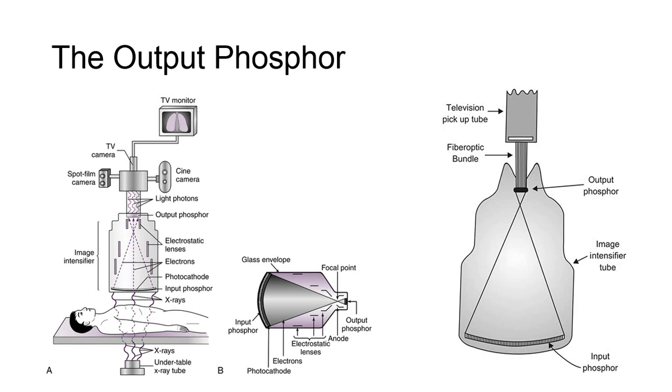It should be noted that the image received at the output phosphor is upside down compared to the image received at the input phosphor. This is because of the focal point created at the anode within the image intensifier.